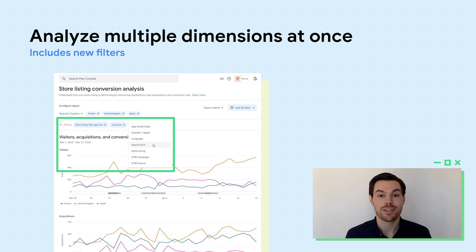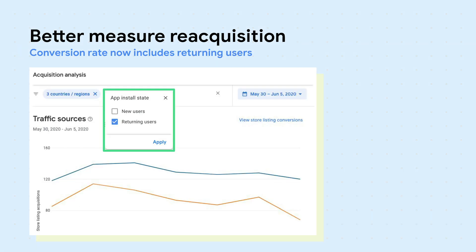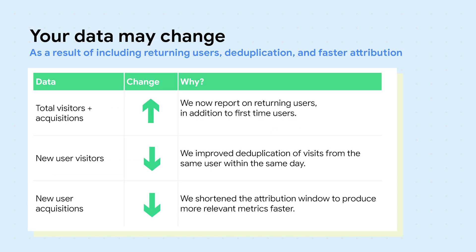We've introduced new dimensions, such as language and store listing, and also allow you to filter across different dimensions, like looking at search terms from Spanish speakers in the US. We've newly introduced returning users, in addition to first-time installers, so you can now measure reacquisition. This is especially important for older apps. Most apps will see an overall increase in visitors and acquisitions because of the addition of returning users. Our refined metrics have improved deduplication to better reflect your store performance, and concentrate on acquisitions that complete shortly after the visit, so you have data sooner to make more timely marketing decisions.